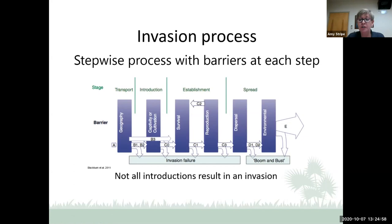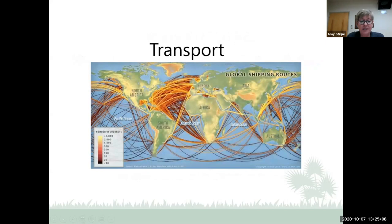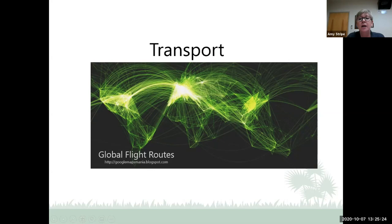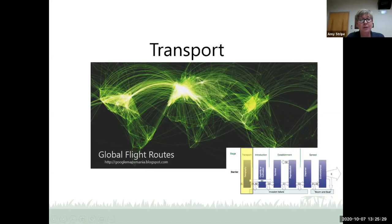This figure shows the interconnectivity of the world through shipping routes and the volume of travel by air and sea. You can see that geography is probably not much of a barrier anymore for most non-native plants.